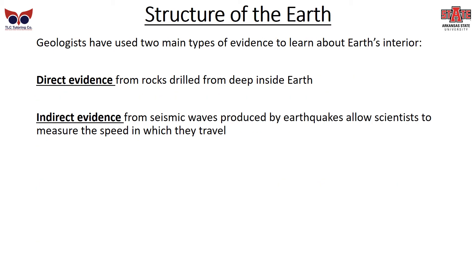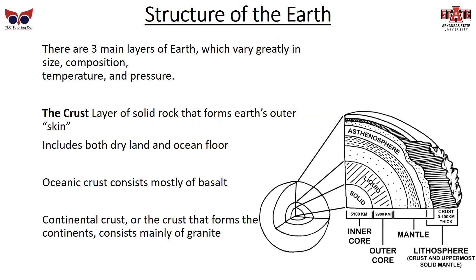Geologists have two main types of evidence to learn about the Earth's interior: direct evidence, such as rocks drilled from deep inside the Earth, and indirect evidence from seismic waves produced by earthquakes that allow scientists to measure the speed at which they travel. There are three main layers of the Earth, varying greatly in size, composition, temperature, and pressure. The first layer, the outer layer, is the crust — a layer of solid rock that forms the Earth's outer skin, including both dry land and the ocean floor. Oceanic crusts are mostly basalt, while continental crusts are mostly made of granite.